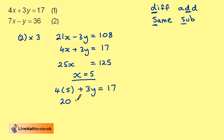So 20 plus 3y is equal to 17. 3y is equal to minus 3, so y is equal to minus 1.